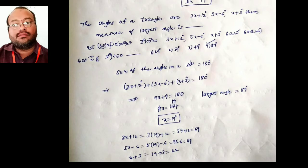Next question: the angles of a triangle are 3x plus 12 degrees, 5x minus 6 degrees, and x plus 3 degrees. Then the measure of the largest angle is what? The sum of the angles in a triangle is 180 degrees, so we add all three expressions and set them equal to 180 to solve for x and find the largest angle.